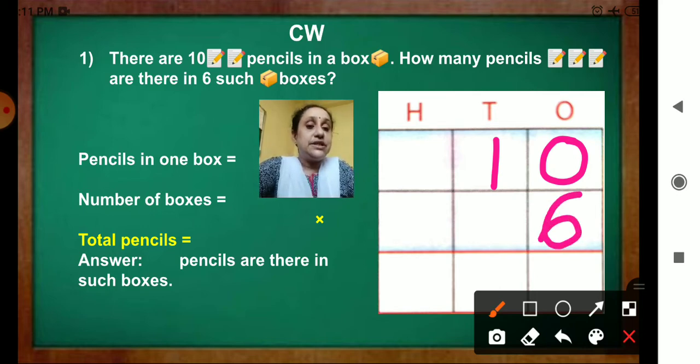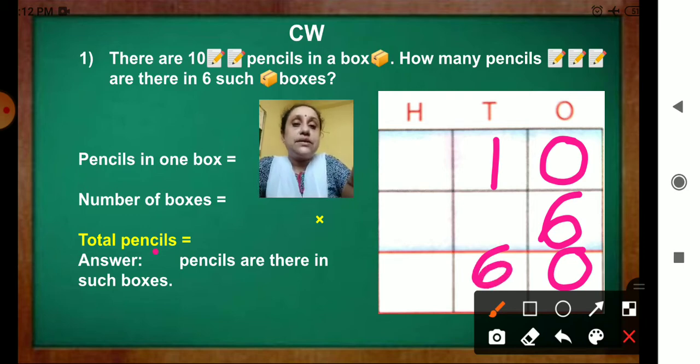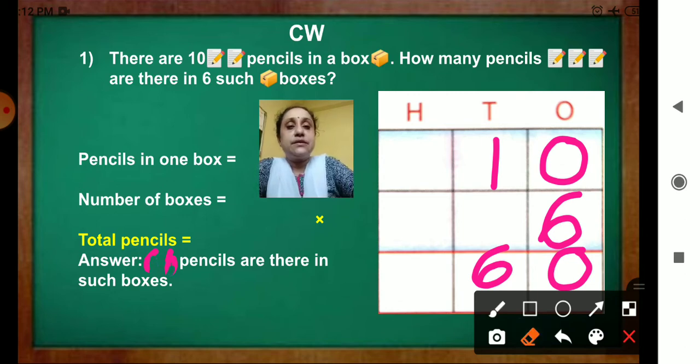Multiplication sign. Put the multiplication sign then. 10 multiplied by 6. 6 zeros are 0 and 6 ones are 6. So, answer 60 pencils are there in such boxes.